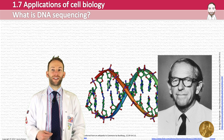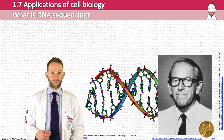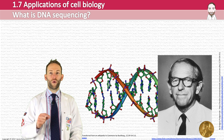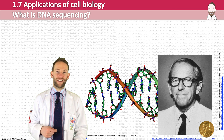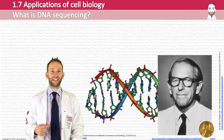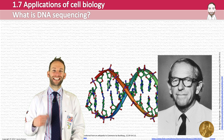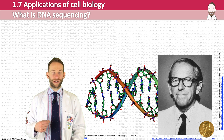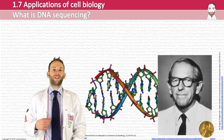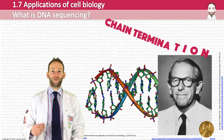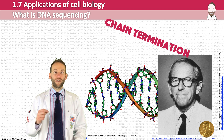DNA sequencing is a process where you work out the actual order of the bases in a strand of DNA. It was first invented in 1980 by Frederick Sanger, and he won the Nobel Prize for working out this method. In order to understand the method he used, which was called chain termination, you need to know about a few molecules.